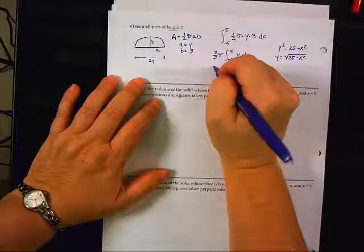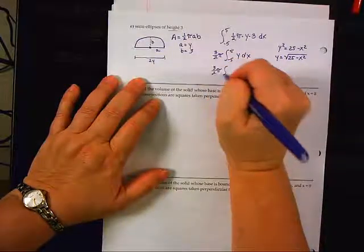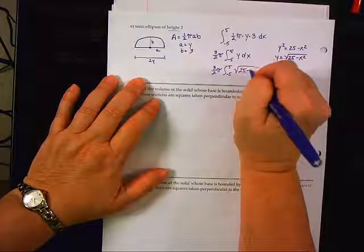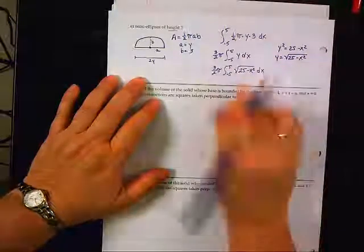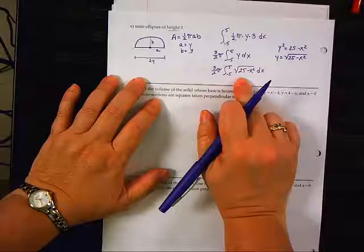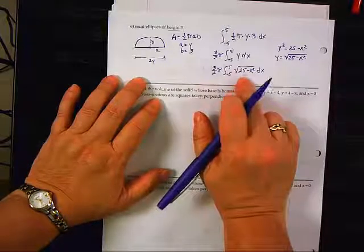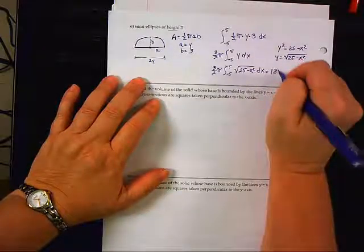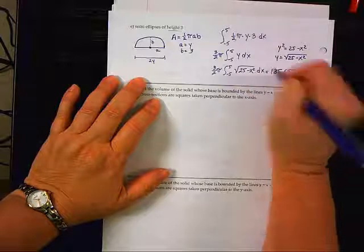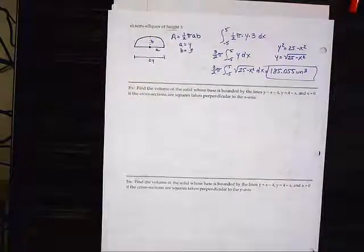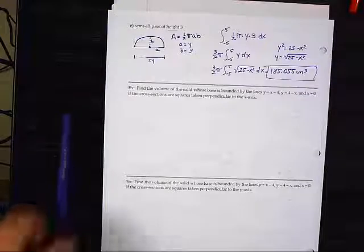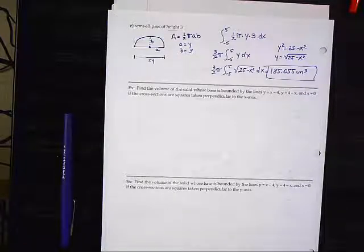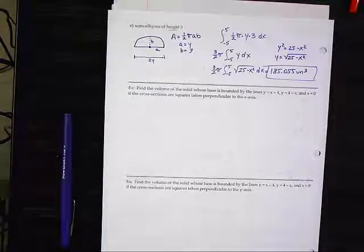Okay, so when we type this in, 3 halves pi, negative 5 to 5, radical 25 minus x squared, dx. And this cannot be done without a calculator because it's a U substitution and it's missing its DU. And the answer happens to be 185.055 cubic units. Okay, what I taught you today should get you through the first four problems on this worksheet. I will teach you how to do the rest of them tomorrow. And we will finish this up. I will put this video up separately.